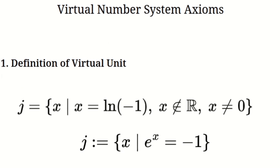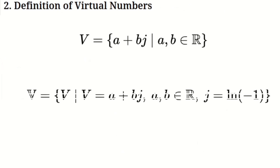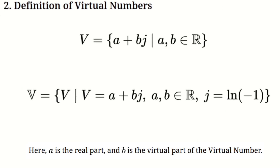Virtual numbers. A virtual number is simply a number made up of two parts. The first part is a regular real number, which we'll call A. The second part is the virtual coefficient, which we'll call B, and it is multiplied by J. So a virtual number looks like this: A plus B times J. Here, A and B are real numbers, and J is the special virtual unit we just defined. This structure forms the basis for virtual numbers.